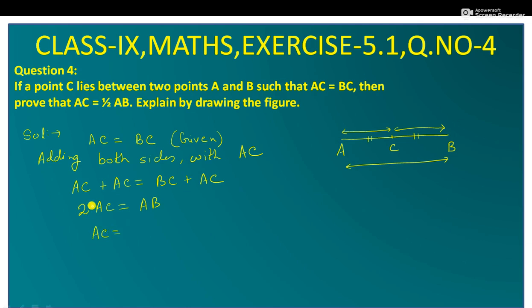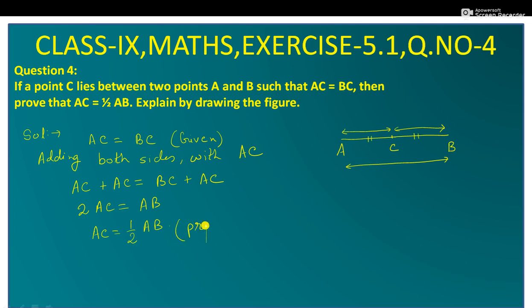और इसे हम लिख सकते हैं AC. यह कुछ नहीं — यहाँ multiply है, यहाँ आकर divide हो जाएगा — 1 by 2 of AB. तो AC is equal to half of AB. This is proved. This is the proof.